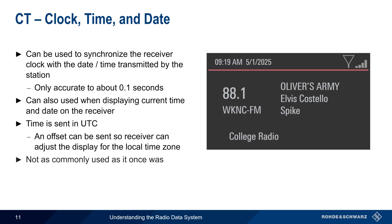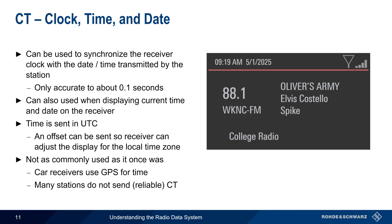It's worth noting, however, that the CT parameter is not as widely used as it once was. Most modern car receivers now get time and date via GPS, which was not available when RDS was first defined. In addition, many stations currently do not send reliable CT information, and do not send the proper time offset.